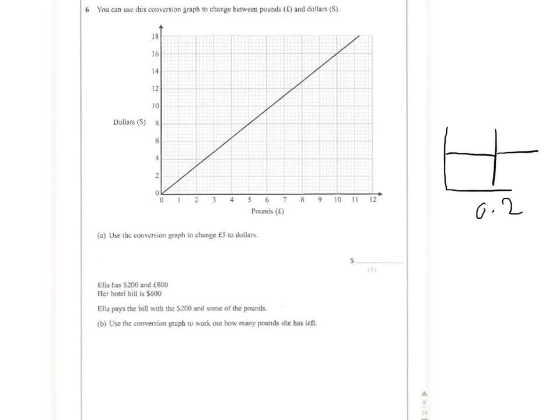On the vertical scale, we've got five squares representing two, so each square is going to represent 0.4. It's important we know that for reading the conversion graph correctly.